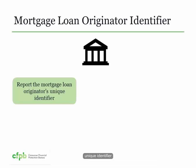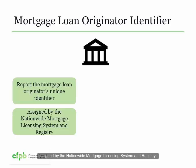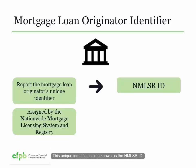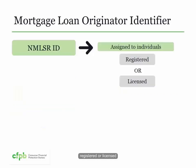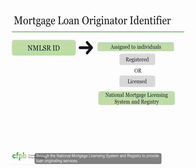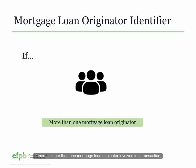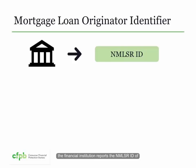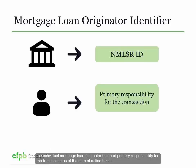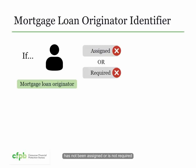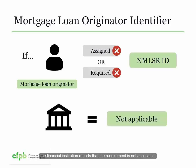The property address should correspond to the property identified on the legal obligation related to the covered loan. If an application did not result in an origination, the financial institution reports the location of the property proposed to secure the loan as identified by the applicant. Information related to the physical location includes the street address, city name, state name, and zip code. If the property address is not known or not provided before the application was denied, withdrawn, or closed for incompleteness, the financial institution reports that the requirement is not applicable.